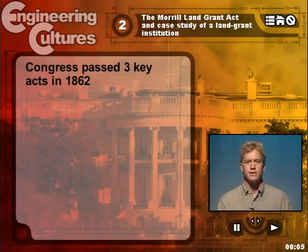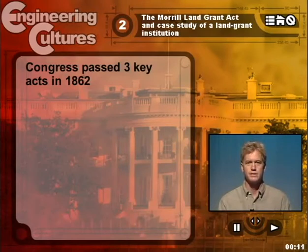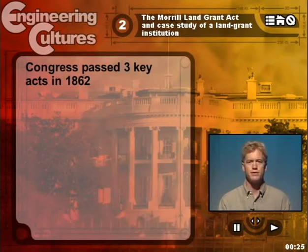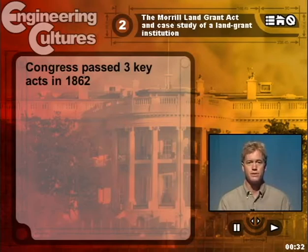Let's now take a look at the establishment and development of the Morrill Land-Grant Act and its subsequent implications. The time period is the Civil War — the year is 1862, right in the middle of the Civil War, and the place is the U.S. Congress. During 1862, Congress passed three very important acts that played a key role both in the expansion of the United States westward and accordingly the rise of engineering in the United States.